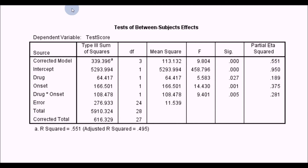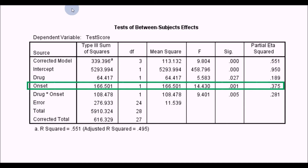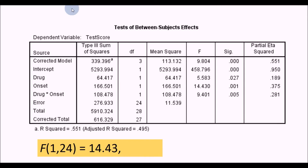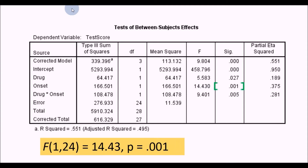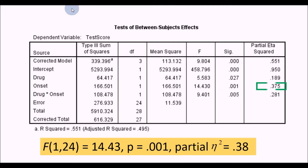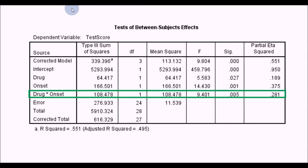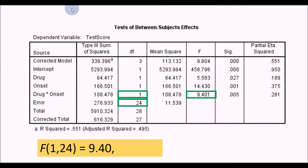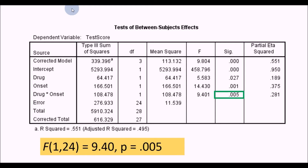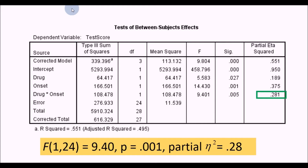Moving to the next line, this is the second independent variable, Onset. F(1, 24) = 14.43, p-value equals 0.001 - notice it's exactly 0.001, so you report it as equals rather than less than. Effect size: eta squared equals 0.38. Finally, the third line is the Drug by Onset interaction. F(1, 24) = 9.40, p = 0.005, and eta squared is 0.28.